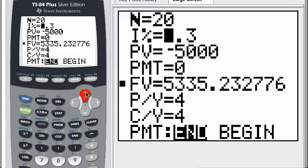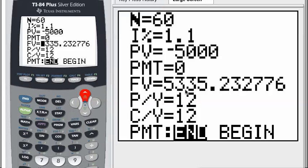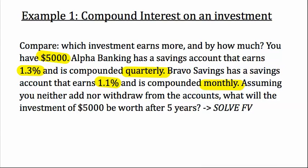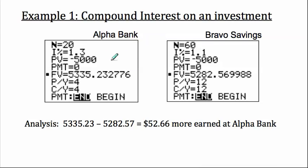Now we want to find out what the deal is with the future value over at Bravo Savings. It was compounded monthly. So 12 times, 5 times a year, 12 times 5. Go down. It's 60. The interest rate was 1.1%. $5,000 still there. And before we calculate future value, let's change compounding periods to 12 for both of these. I'll put the cursor back on FV and hit alpha and then enter. And voila. $5,282.57 if we round it. Let's compare side by side. Alpha Bank. Bravo Savings. Obviously, we get a better investment over time with Alpha Bank. And how much? Just take the difference between the two. You make $52.66 more. Not bad.